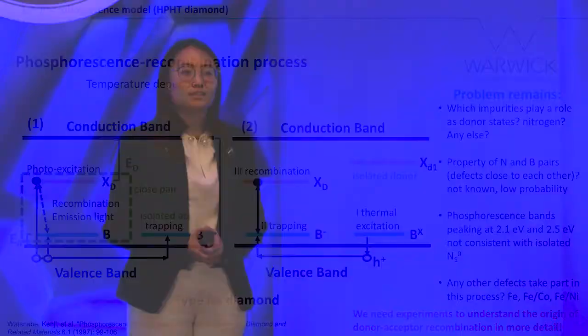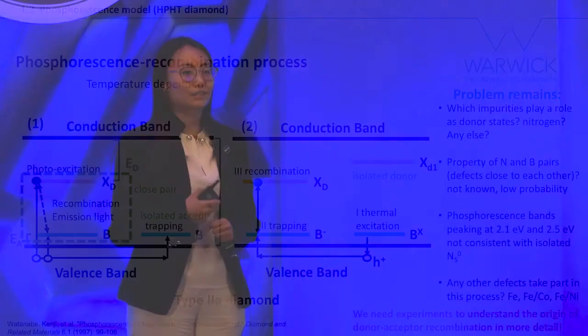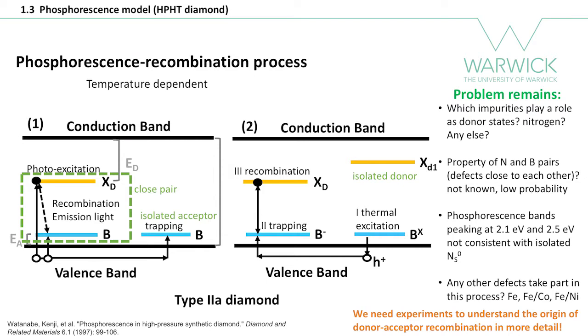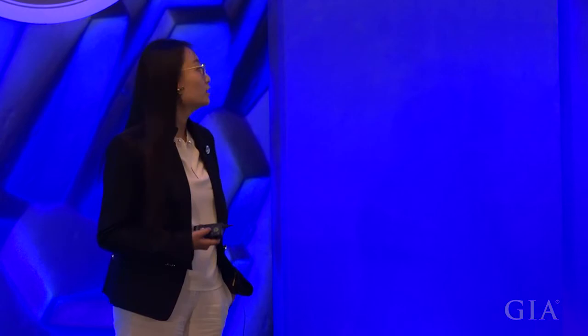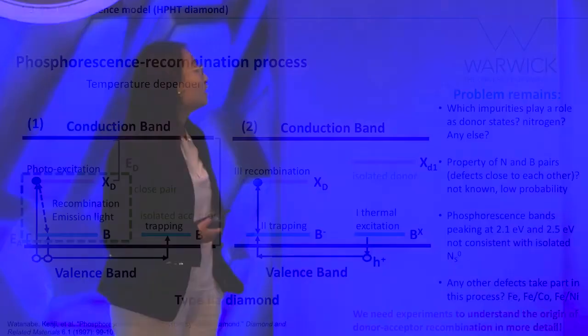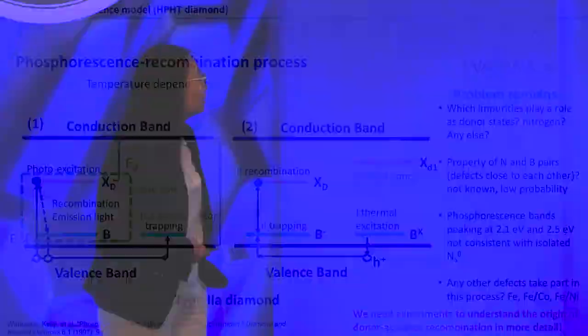So, what is phosphorescence? It is the emission of light which continues to decay after removal of the light source, and it is a temperature-dependent process. This model is an explanation for phosphorescence in type II high-pressure high-temperature diamond, published in 1997. It is based on a recombination process: charge transfer will happen between donor and acceptor pairs when they are both in the neutral charge state, and light will be emitted.